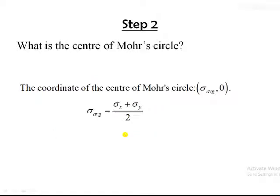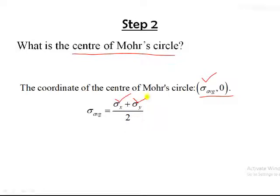The next step is to calculate the center of the Mohr's circle. The coordinate of the center will be given by (Sigma_average, 0). Sigma_average is obtained from Sigma_X and Sigma_Y as: Sigma_average = (Sigma_X + Sigma_Y) / 2. We look at the two normal stress values in the two directions.